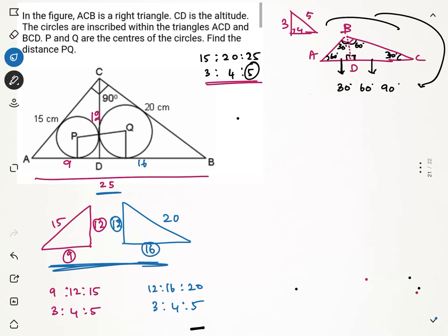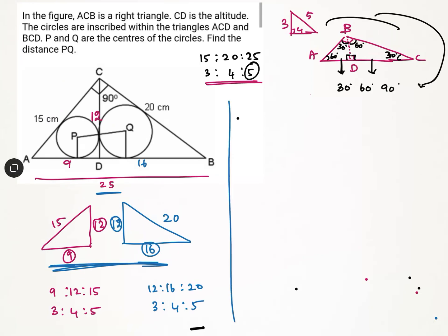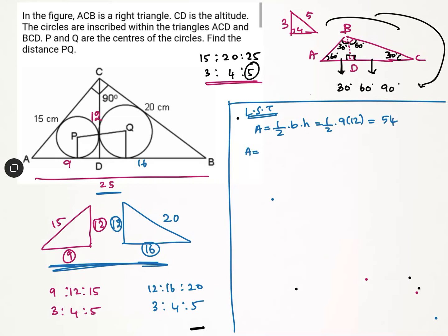Now let us find the inradii. For the left side triangle, area = ½ × base × height = ½ × 9 × 12 = 54. Area can also be expressed as inradius × semi-perimeter. The perimeter is 9 + 12 + 15 = 36, so the semi-perimeter is 18. Therefore inradius × 18 = 54, giving the left side inradius r_P = 3.